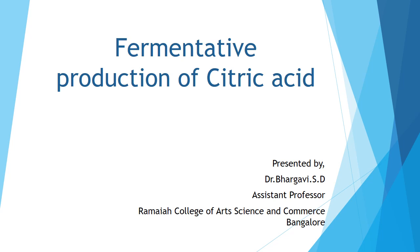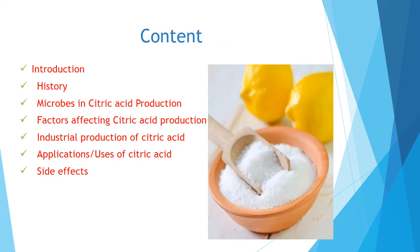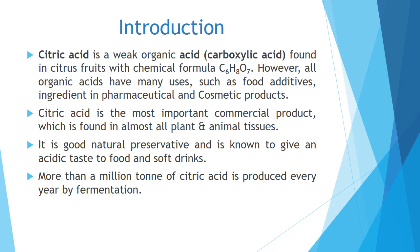This class is particularly on fermentative production of citric acid. This is the second unit of the industrial microbiology syllabus. The first unit I hope we have finished completely, leaving the chromatographic techniques for the next classes. The contents of this class include: introduction to citric acid, history, microbes used in production, factors affecting production, industrial production, applications, and side effects.